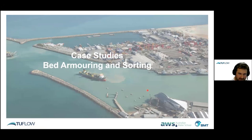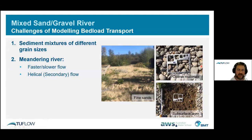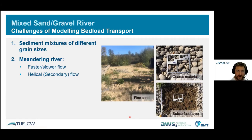The first case study looks at validation from bed armouring and sorting work on gravel bed rivers. These rivers have quite fine sands on the banks and develop a bed armour layer — coarser material sitting on the surface that protects the lower layer. As water moves across, it picks up finer material and moves it downstream or onto the bank. We need a model that can handle both the sorting of sediment and the formation of the armour layer.